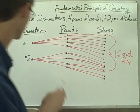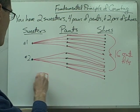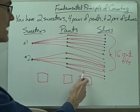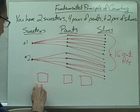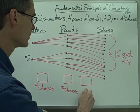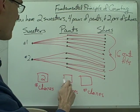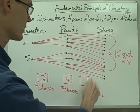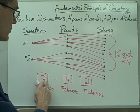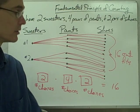Another way of doing this calculation instead of drawing this picture — I can draw a box for each one of my items of clothing. The box represents the number of choices I have for that particular item. The number of choices for sweaters is two, the number of choices for pairs of pants is four, and the number of choices for pairs of shoes is two. If I multiply them together, two times four gives me eight, and two times eight gives me 16. This is what's called the fundamental principle of counting.